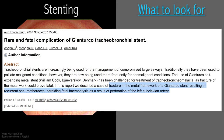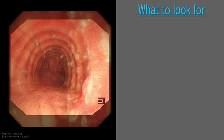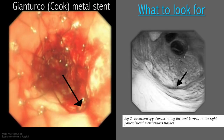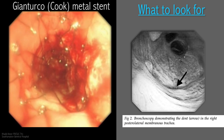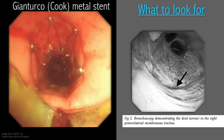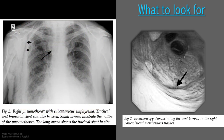Our experience of stenting at Southampton General Hospital began with a certain type of stent made by William Cook — the Gianturco metal stent. This was a rigid, self-expanding metal stent that we no longer use. We have previously reported fracture in the metal framework of a Gianturco stent resulting in recurrent pneumothoraces, heralding fatal haemoptysis as a result of perforation of the left subclavian artery.